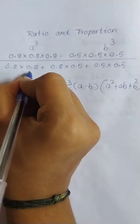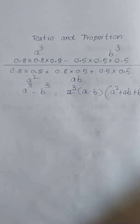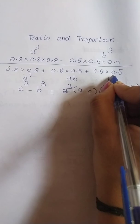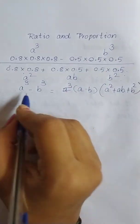Now, I can write this as A cube and this as B cube and this as A square, this as A into B, and this as B square, fine? I can write it like this now.